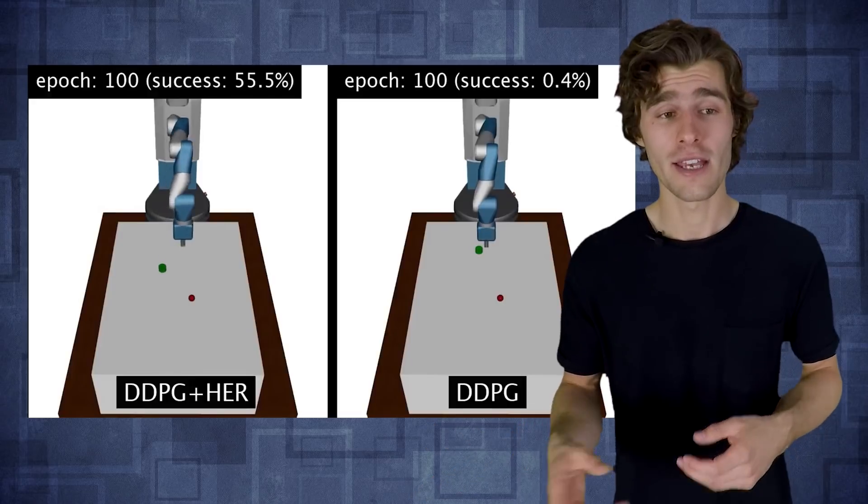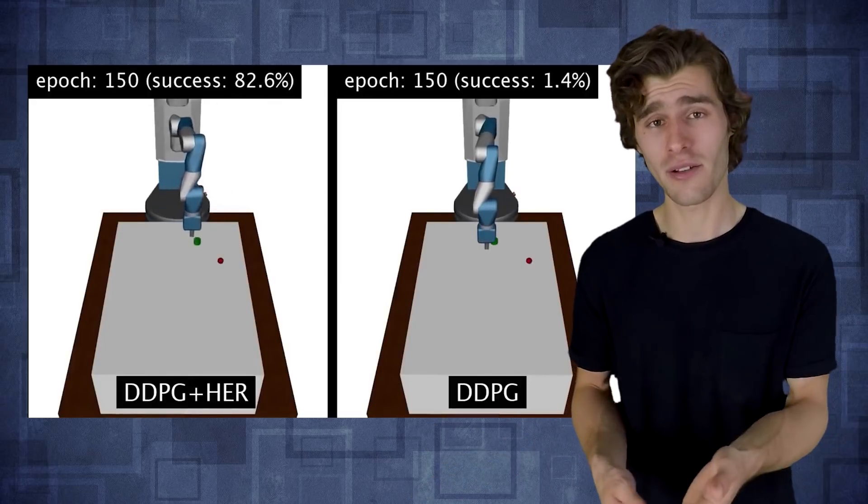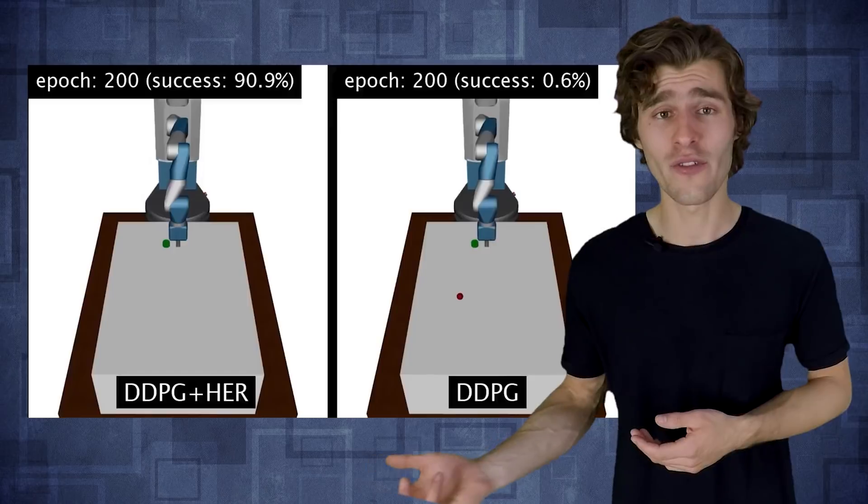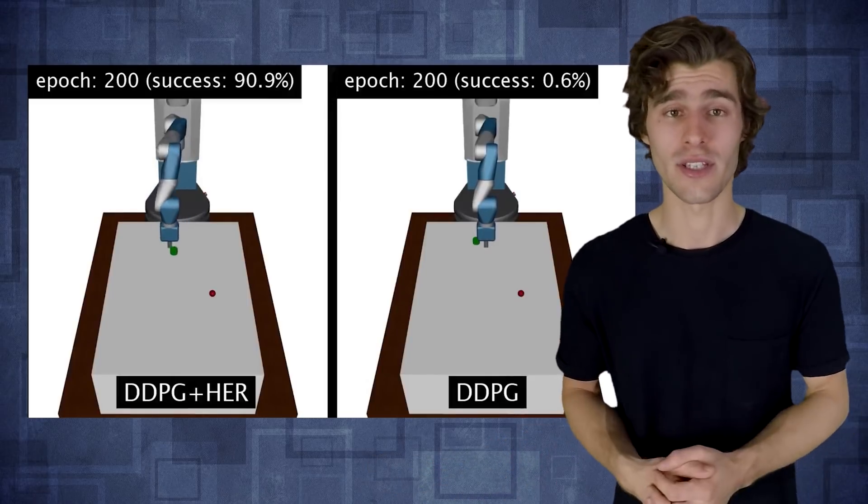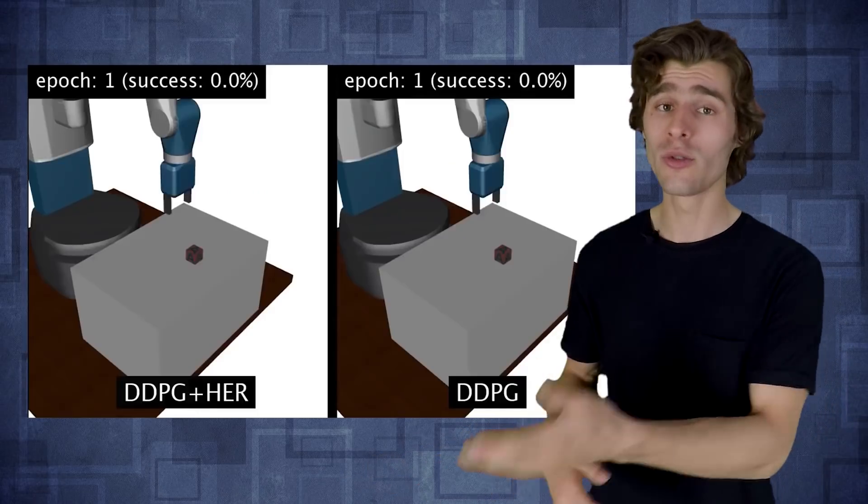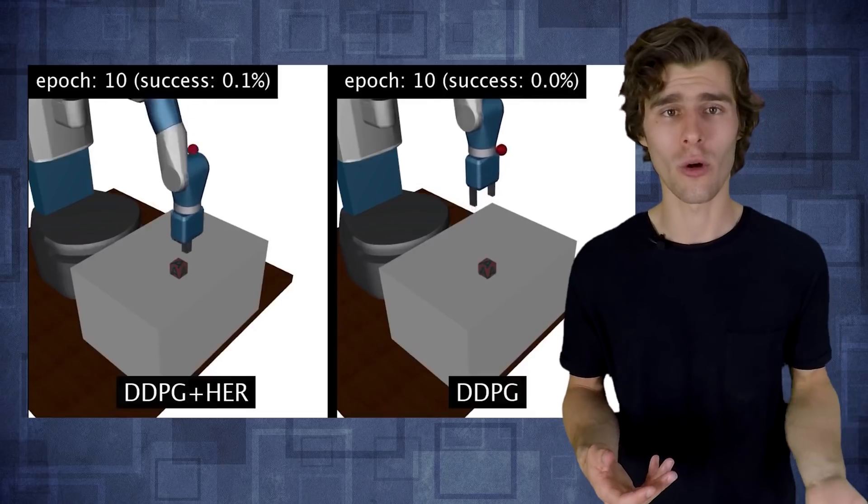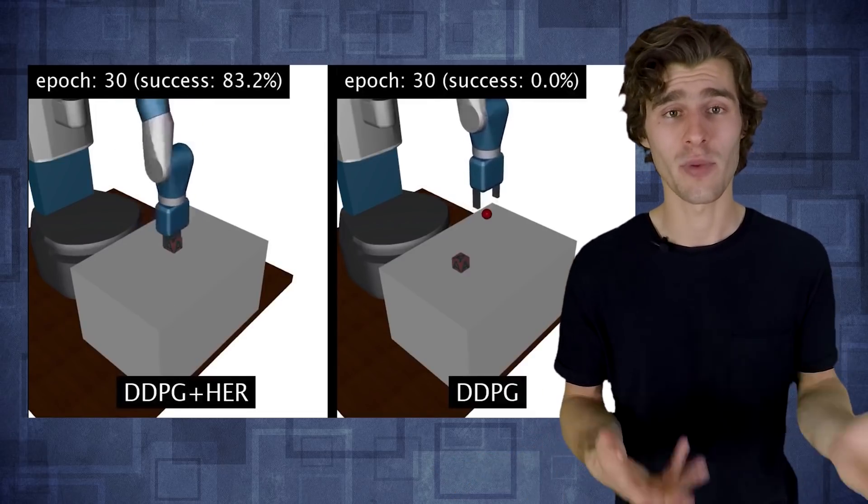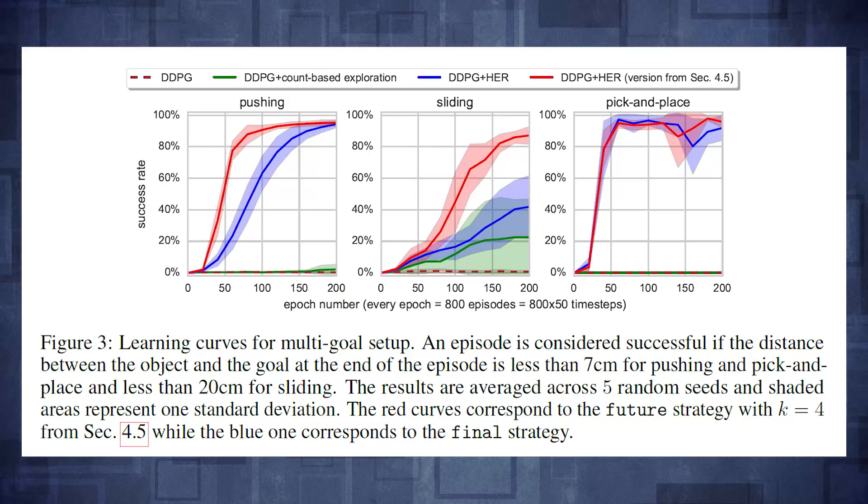And the really nice thing about this algorithm is that after training, you now have a policy network that can do something different based on the goal that you give it. So if you want to move the object to a new location, you don't have to retrain the whole policy, you can just change the goal vector and your policy will do the right thing. And so in the graph here, the blue curve represents the results from hindsight experience replay when the additional sampled goal was always the final state of the episode sequence, right? So it's the actual position that the object ended up in after executing a sequence of actions.